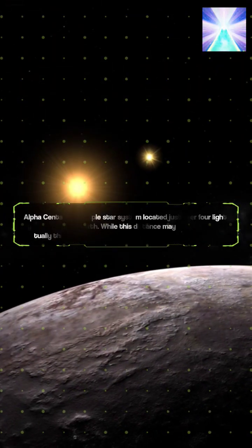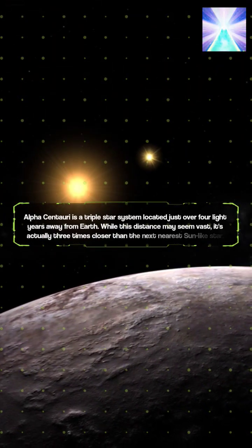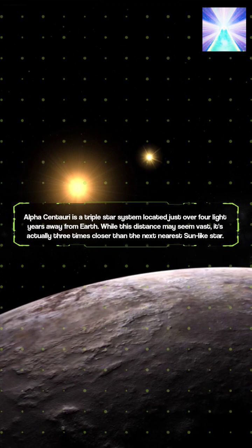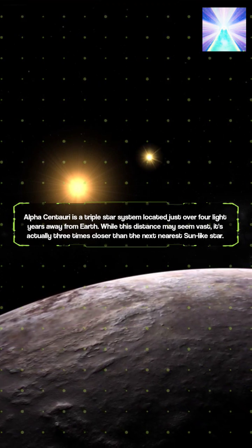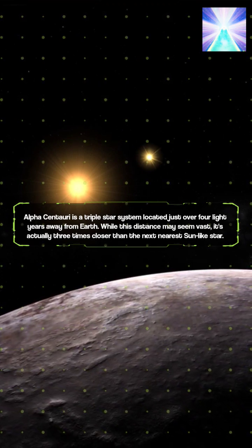Alpha Centauri is a triple star system located just over four light years away from Earth. While this distance may seem vast, it's actually three times closer than the next nearest Sun-like star.